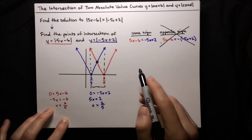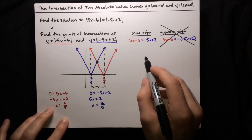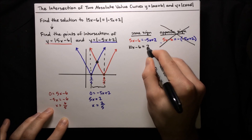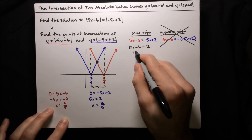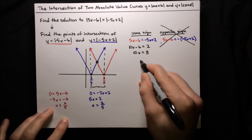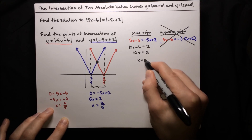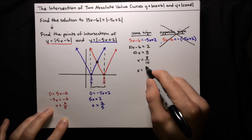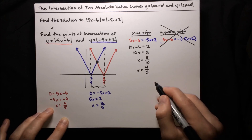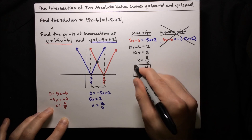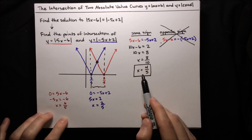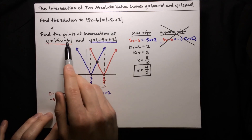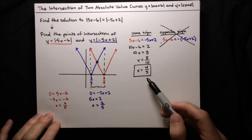So we'll go ahead and solve the same-sign equation. We add 5x to both sides to get 10x minus 6 equals 2, then add 6 to both sides to get 10x equals 8, then divide by 10 to get x equals 8 over 10, or more simply x equals 4 fifths. That is our solution to the original equation. We don't have to solve for y because the original equation didn't ask for y — y was just something we introduced to make this problem look like something we've seen before.